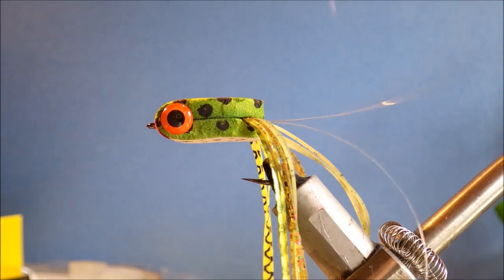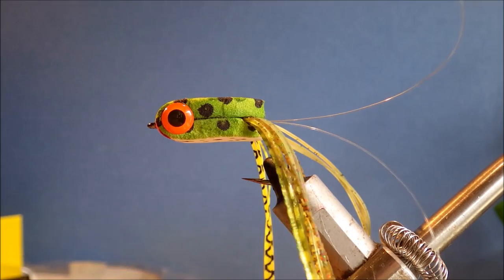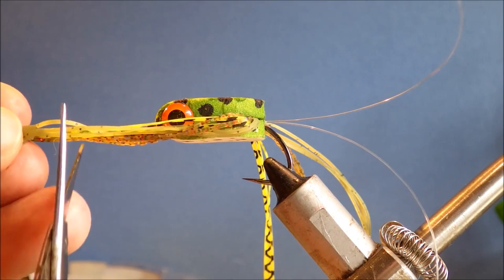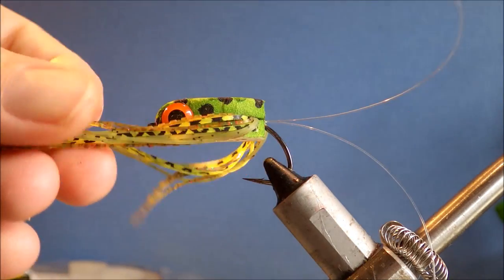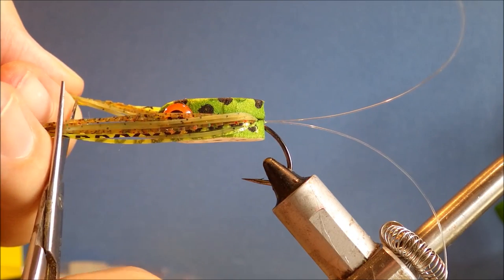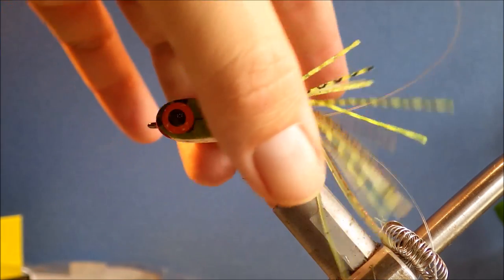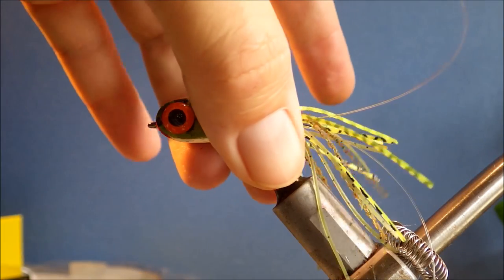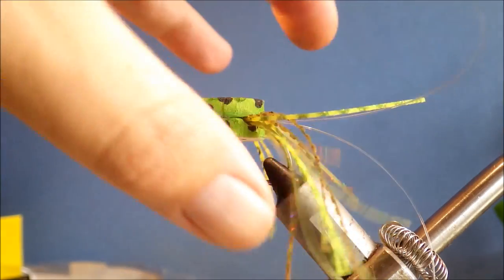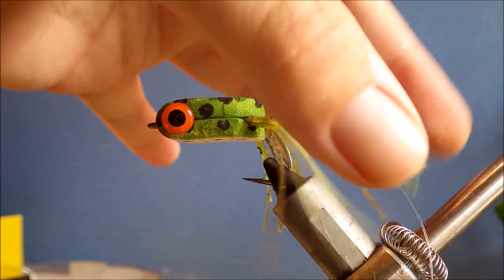So the tie is pretty much finished really. The weed guard still has to be tied off at the front, but first I'm going to trim my legs. Same length, more or less. Just even them up slightly. Just take a bit off of this. There we go.